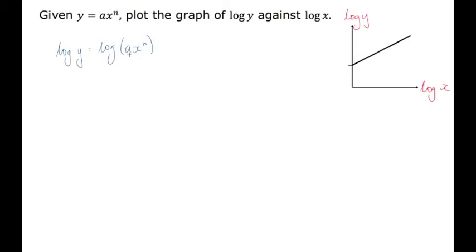Now here a really common mistake is to think, I know my log rules, I'll bring this n down in front. You can't do that. The reason is because the a isn't also to the power n. If it was, and we had something like that, so ax to the n, then you could bring that n down. But as it is, you can't.